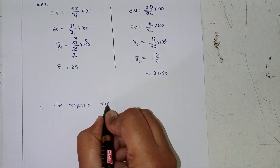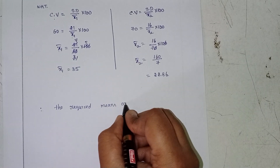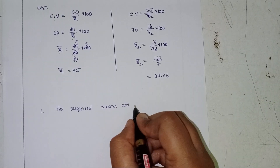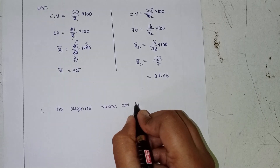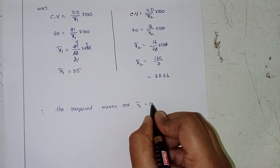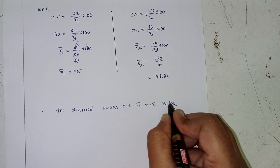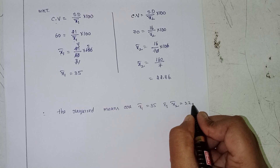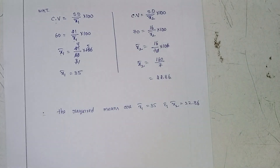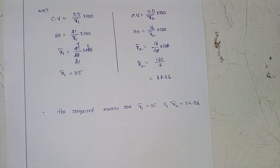Therefore the required means are x̄₁ equals 35 and x̄₂ equals 22.86. This is the required solution. If you have any doubts, please comment. In the next class we will discuss the solution. Thank you for watching, take care.